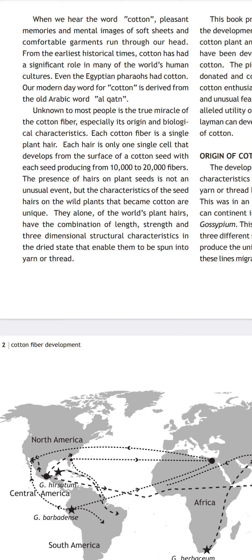And biological characteristics: each cotton fiber is a single plant hair. Each hair is one single cell that develops on the surface of a cotton seed, with a tremendous 10,000 to 20,000 fibers. The presence of hairs on plant seeds is not only usual — it is actually an unusual event — but the characteristics of the seed hairs on the wild plants that became cotton are unique.